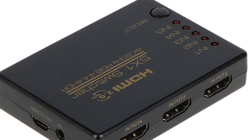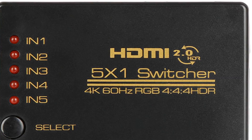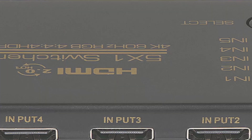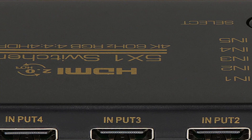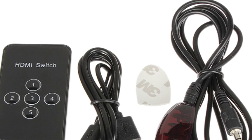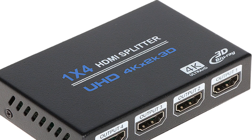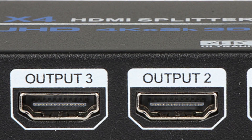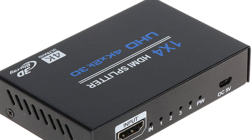The key difference between an HDMI splitter and an HDMI switch is in their use cases. If you need to display the same content on multiple displays, you need an HDMI splitter. If you want to switch between multiple input sources on a single display, you need an HDMI switch. In summary, an HDMI splitter is used to split one HDMI input signal into multiple output signals, while an HDMI switch is used to connect multiple HDMI source devices to a single display and switch between them.